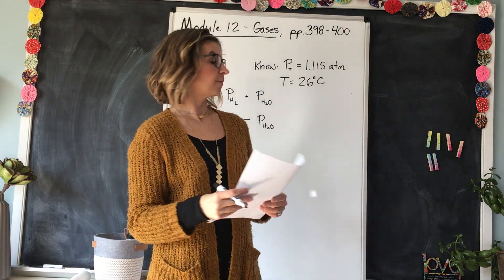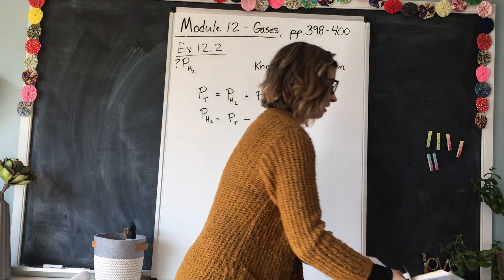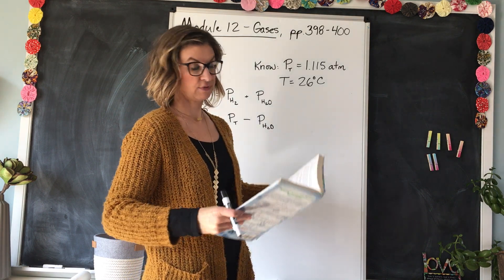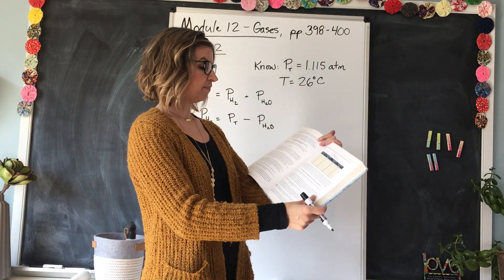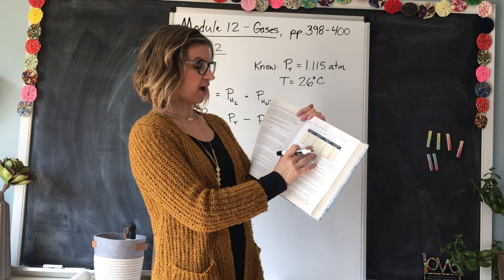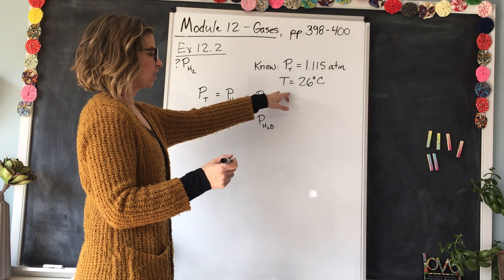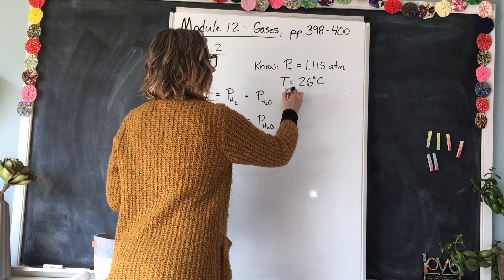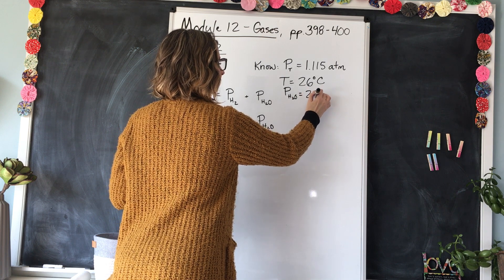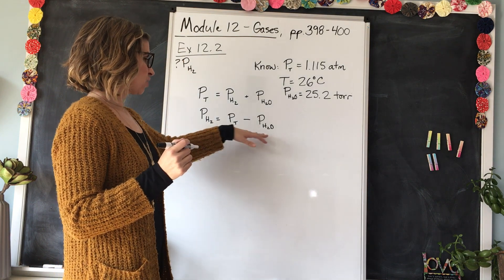What is the pressure of the water vapor? We know the temperature is 26 degrees, so we can use a reference table — which will be provided on the test. This table tells us that at 26 degrees Celsius, the vapor pressure of water is 25.2 torr. So we can add that to our knowns: P_H2O = 25.2 torr.